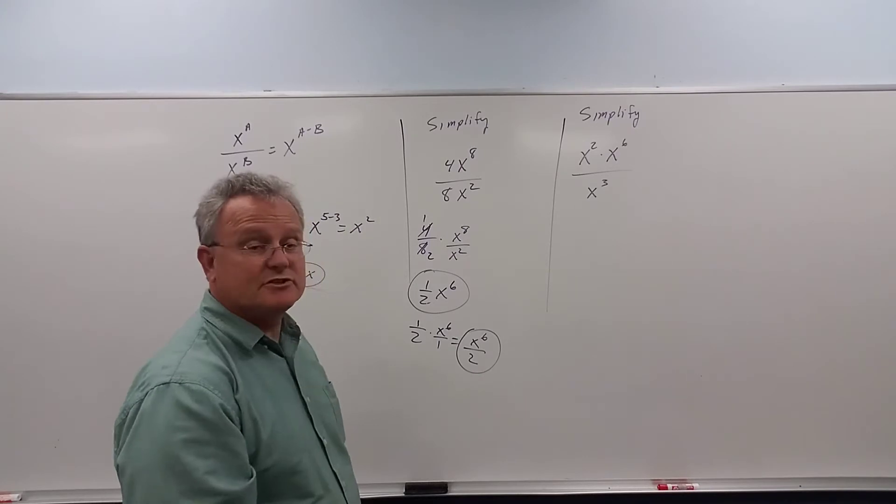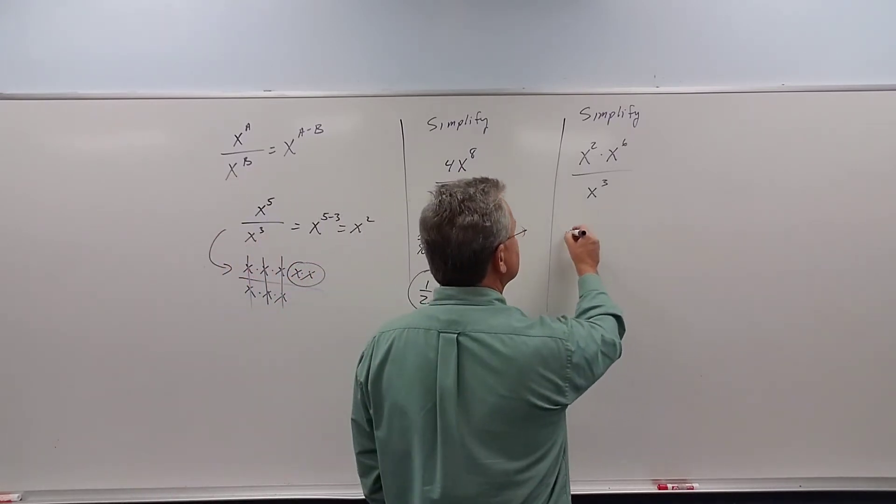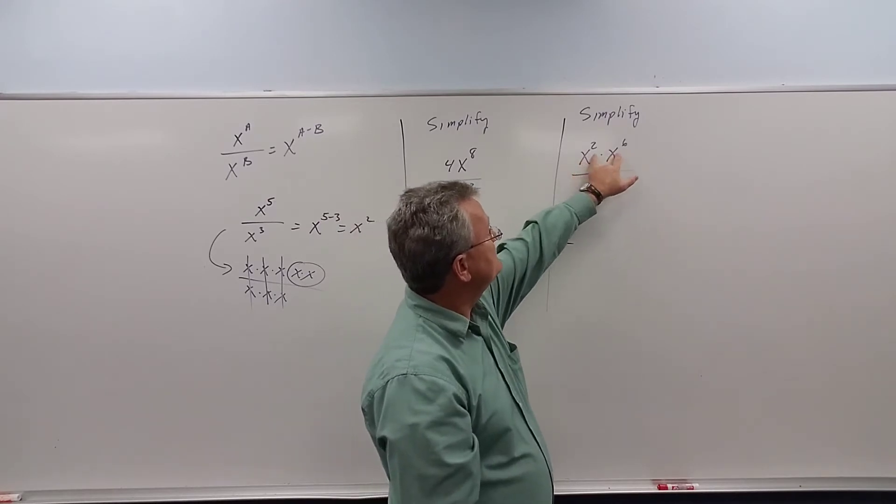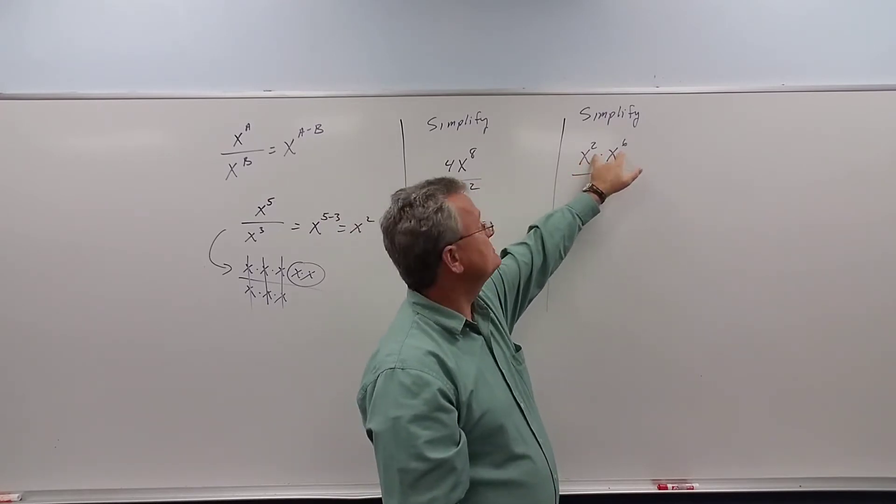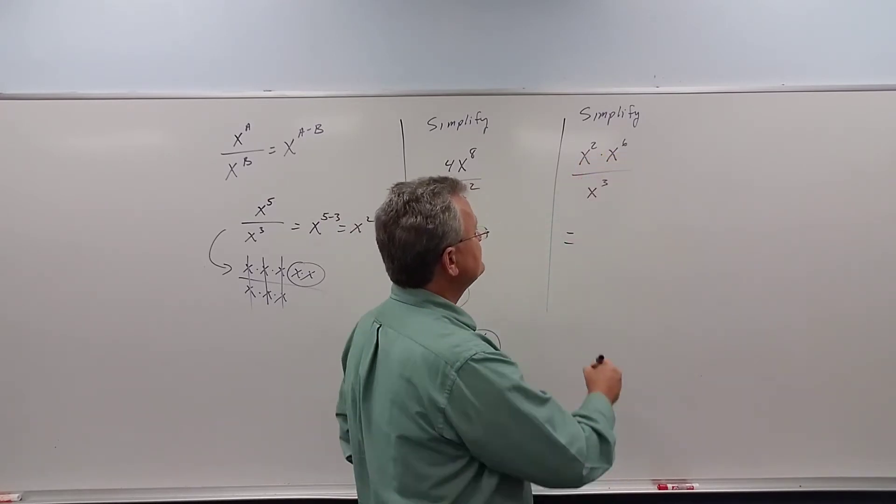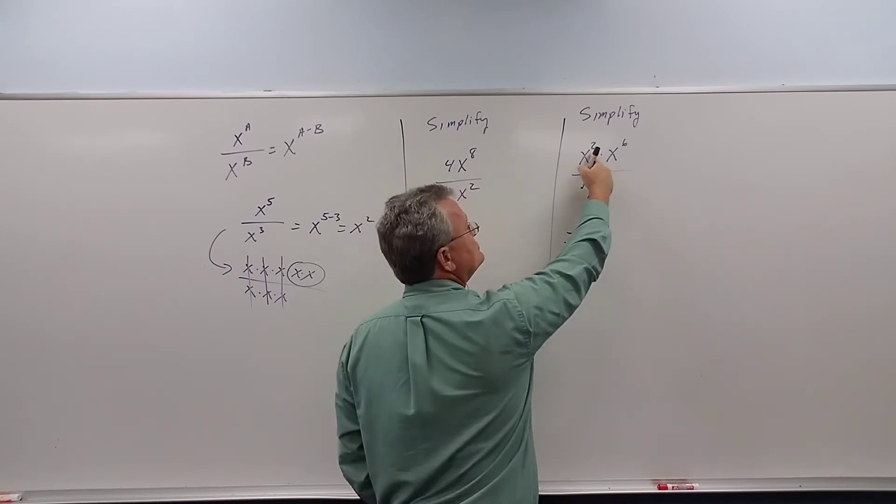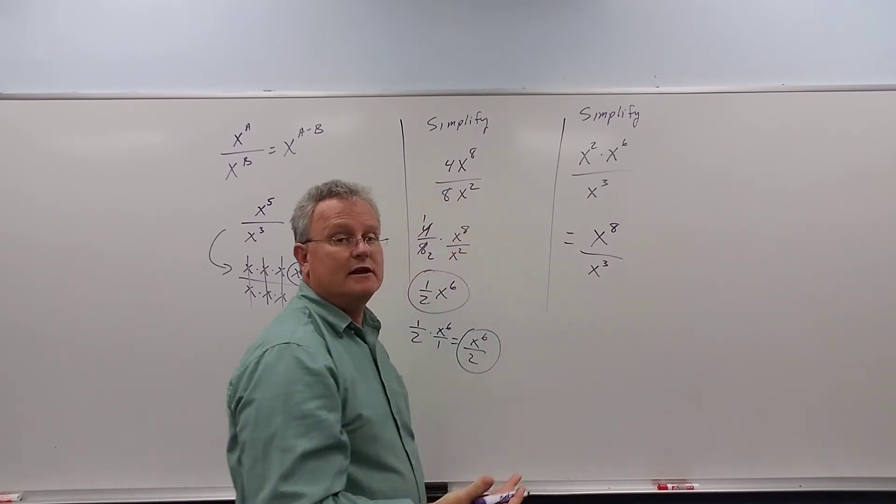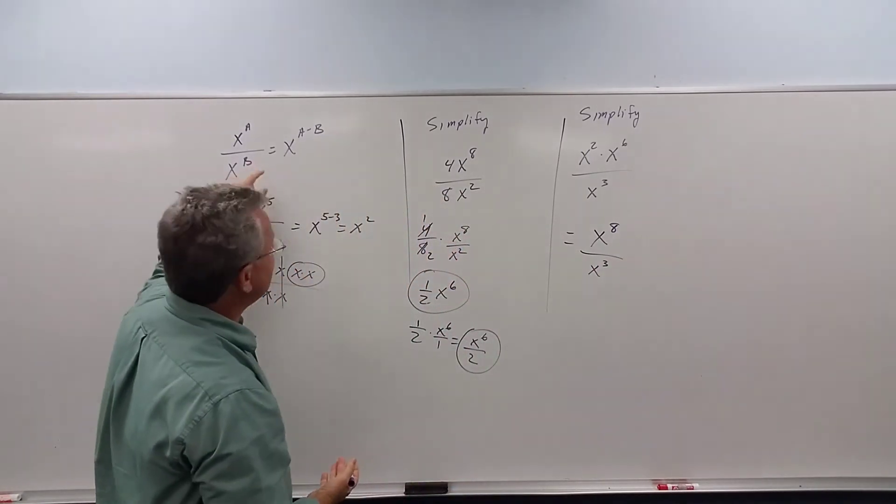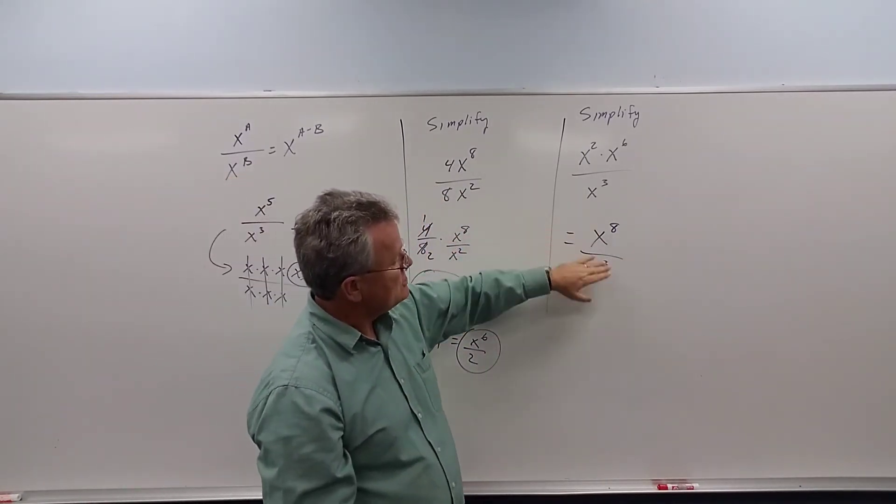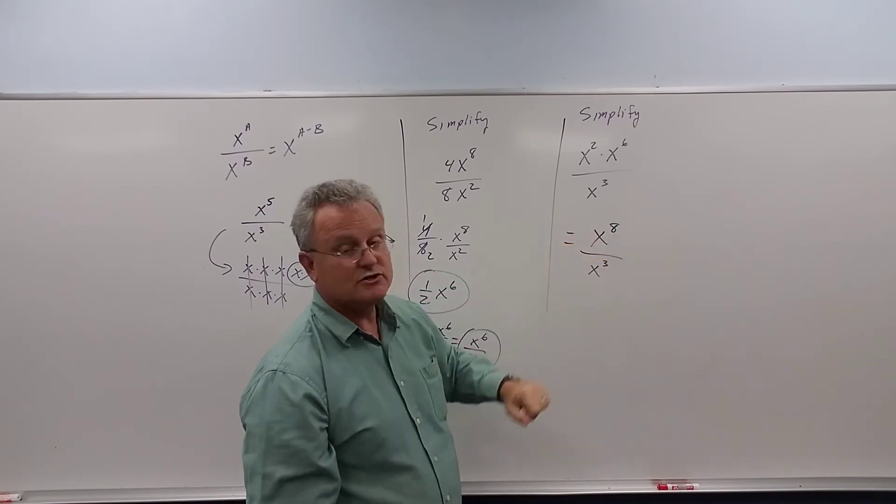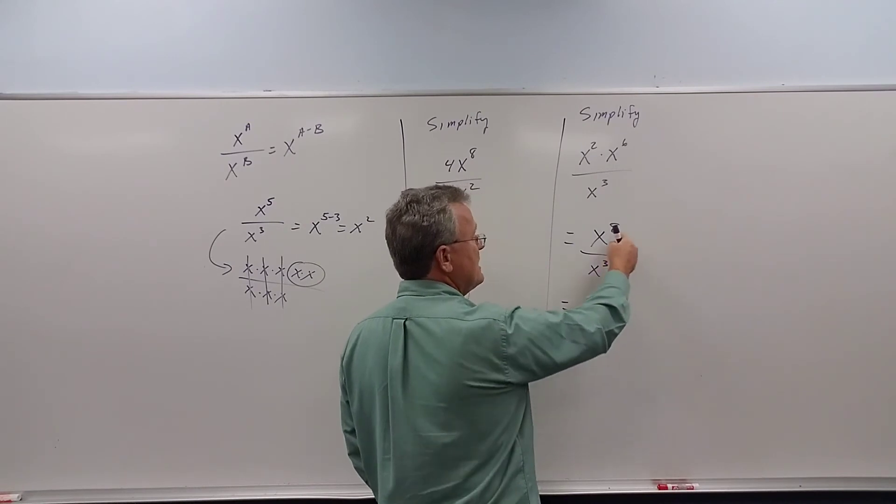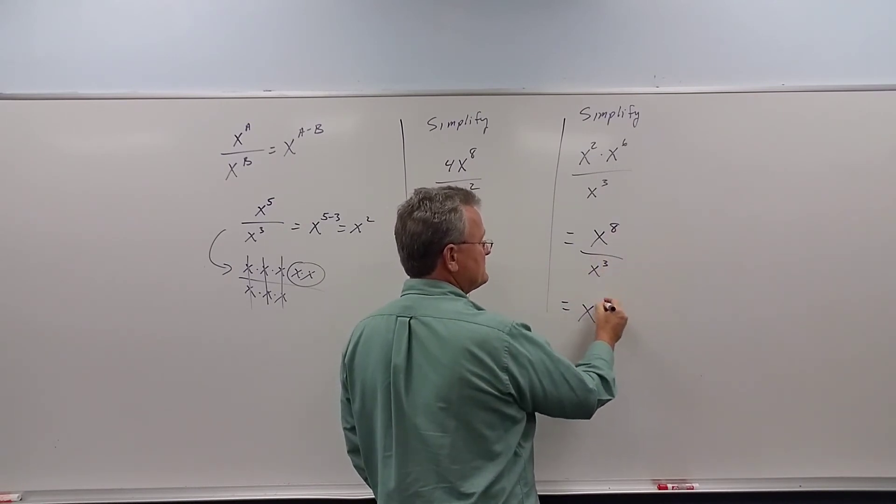All right, so now let's combine a couple different rules. The rule in the previous video said in this case we add the exponents. x to the 2 times x to the 6, 2 plus 6 gives us 8, divided by x to the 3. Now we apply this rule, now that we have one fraction, x to the power over x to the power. We subtract, and we get x to the 8 minus 3 gives us 5.